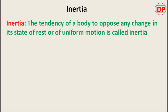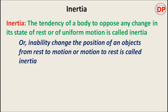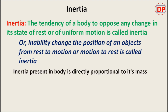Inertia is the tendency of a body to oppose any change in its state of rest or uniform motion. The inability to change the position of an object from rest to motion, or motion to rest, is called inertia. Inertia present in the body is directly proportional to its mass — it depends upon mass.